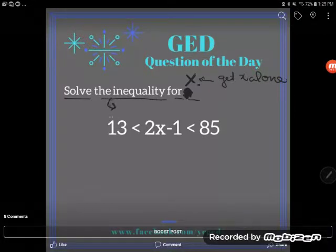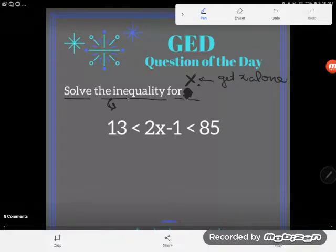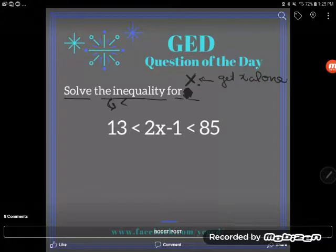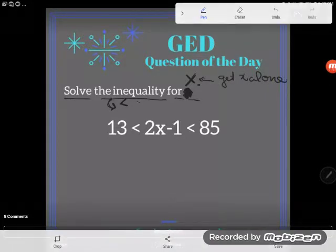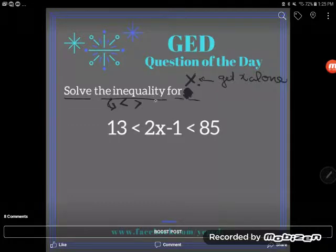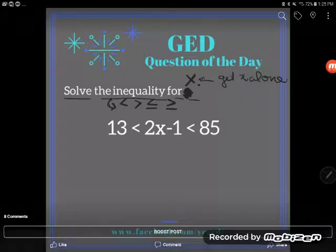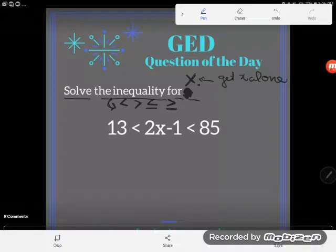There's not a whole lot of differences, but the thing about inequalities is they don't have equal signs. Instead, what they do have is inequality signs, like this side is less than that side, or this side is greater than that side, or this expression is less than or equal to that side, or greater than or equal to that side. Those are the four inequality symbols we can see.